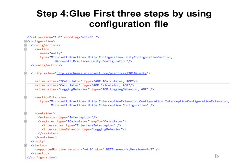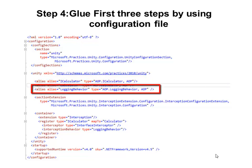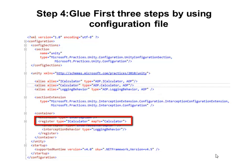The first step is to define an alias and map the alias to the type. We will first map the interface ICalculator to the type. Then we will map the concrete class that implements ICalculator — that is, the Calculator class. The last class for which we will define an alias will be the LoggingBehavior. We also have to map the interface to the concrete class. In our case we have only defined one concrete class, Calculator, that implements ICalculator.